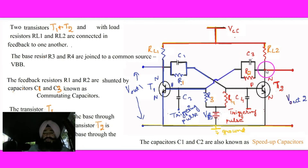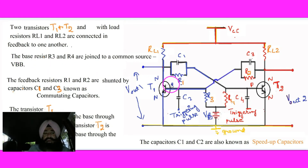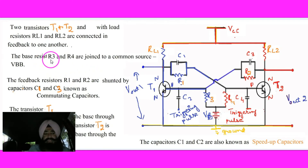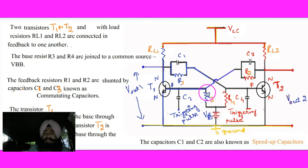The collector of T2 is connected to the base of T1 through the parallel arrangement of C3 and R2. So the output of T1 is connected to the input of T2 through the RC parallel arrangement. The bases of T1 and T2 are connected to the positive supply VBB through R3 and R4.